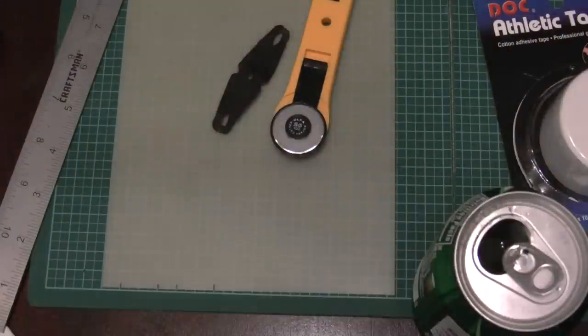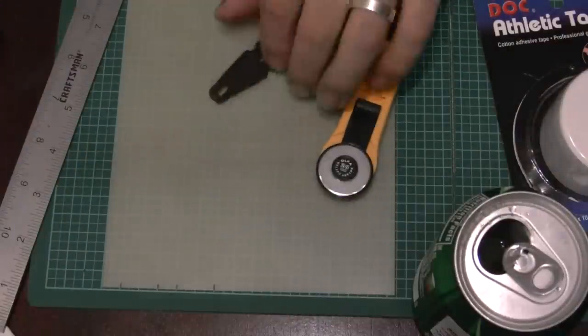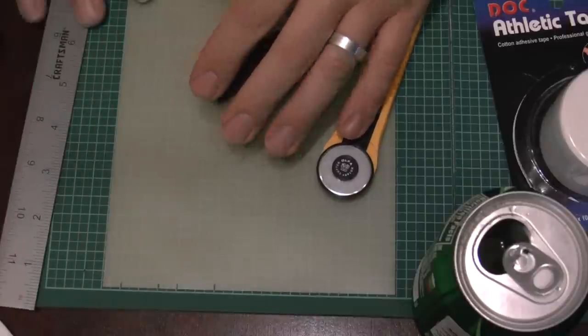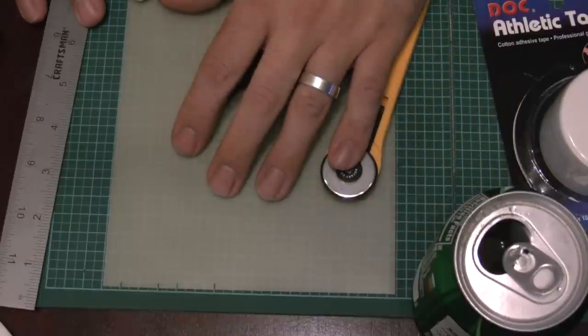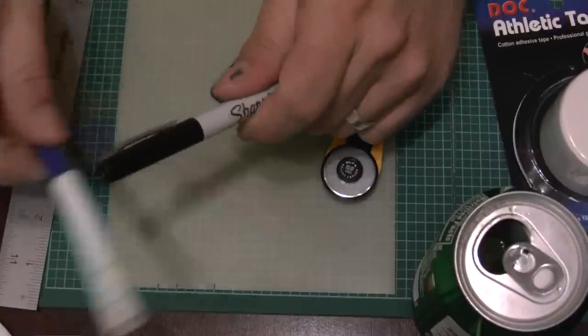So the materials you'll need is that, your rotary cutter, pouch, ruler, your sheet that you're going to cut your bands with, marker, various markers.